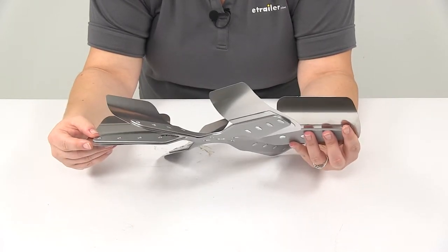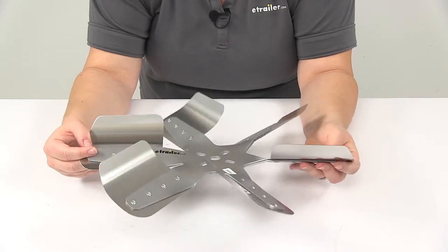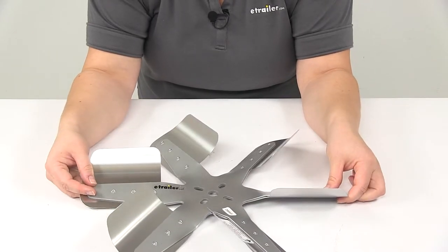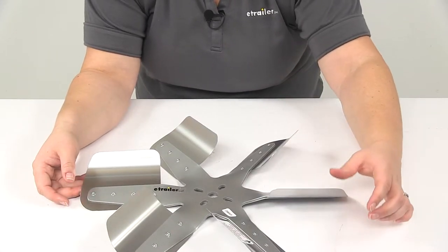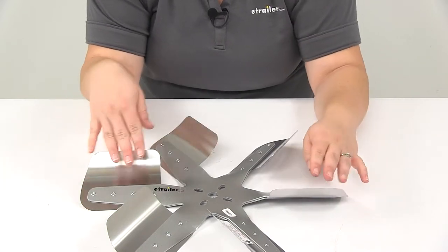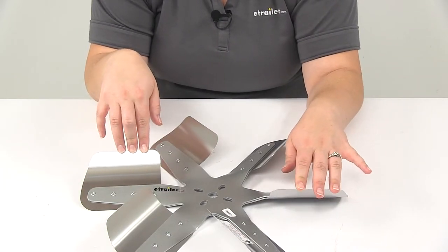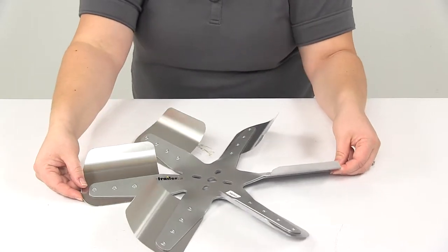As you can see, it's going to have those curved stainless steel blades, and that's going to offer better airflow at idle, since that curved design catches more air, and those do flatten out at high speeds to reduce engine drag.